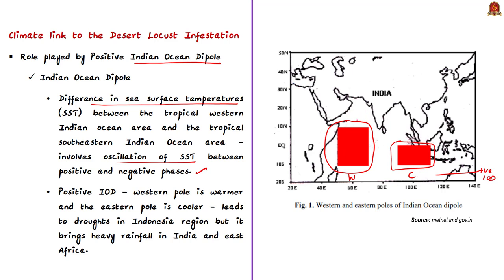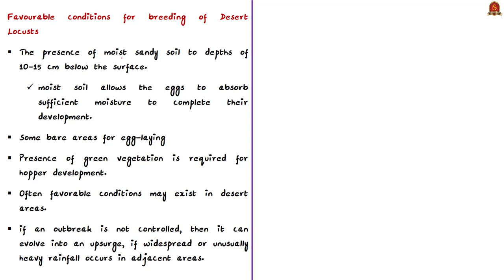The positive Indian Ocean Dipole last year resulted in extended rainfall in several parts of West Asia — Oman, Yemen — and in the Horn of Africa. This extended rainfall facilitated the formation of several locust swarms. For the desert locust, there are three favorable conditions for breeding: first, the presence of moist sandy soil to depths of 10 to 15 centimeters below the surface.